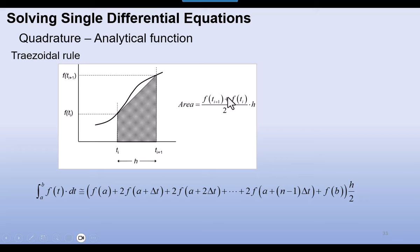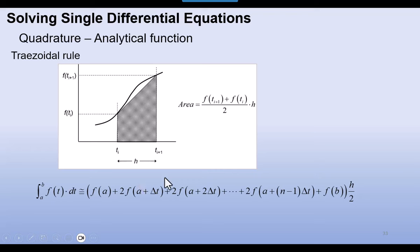That area equals the average of our two function values at the endpoints times h. We divide our interval from a to b into a number of subintervals of width h. As we move through, the interior points carry a coefficient of 2, while the beginning and end points do not. To get the overall area, we multiply the accumulated sum by h over 2.